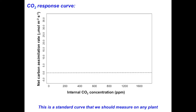Let's go over what a typical CO2 response curve should look like. On the x-axis we have internal CO2 concentration, which is essentially the amount available to the plant, increasing from zero up to 2,000. On the y-axis we have net carbon assimilation rate, representing the balance between how much carbon is released via respiration and how much CO2 gets fixed as it goes inside the plant.